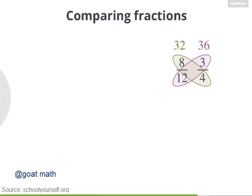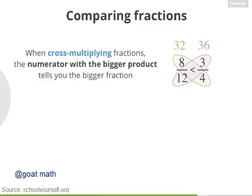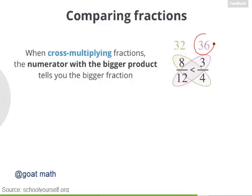Let's take a closer look at 8 twelfths and 3 fourths — they are not equivalent. Cross multiplication also tells you which fraction is bigger. 36 is greater than 32, and that means 3 fourths is greater than 8 twelfths. In general, the numerator with the bigger cross product belongs to the bigger fraction. So 3 fourths is greater than 8 twelfths because 3 times 12, or 36, is greater than 8 times 4, or 32.